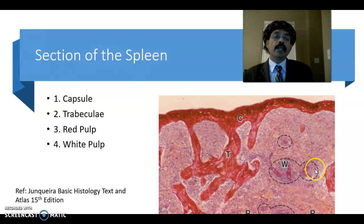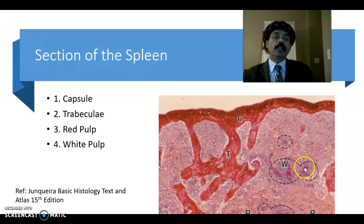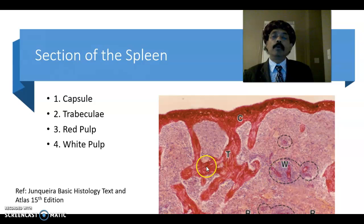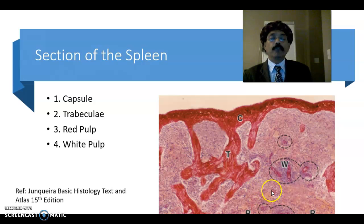The white pulp is the lymphatic nodule area, and the rest part is the red pulp. The red pulp contains the sinusoids and the cords — lymphatic cords, also called Billroth cords. The lymphatic nodule and artery form the white pulp, and the red pulp is composed of the lymphatic cords and sinusoids.